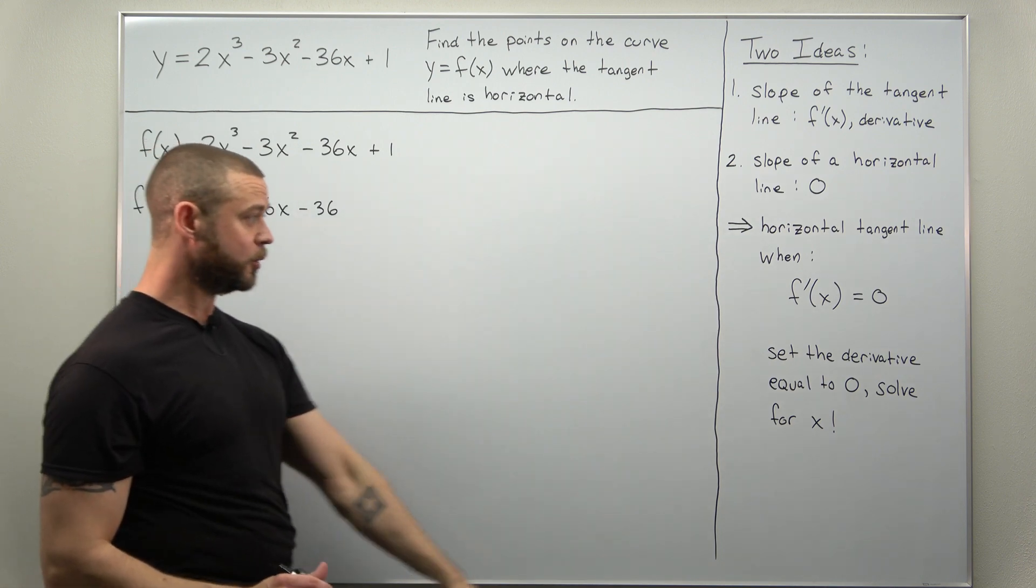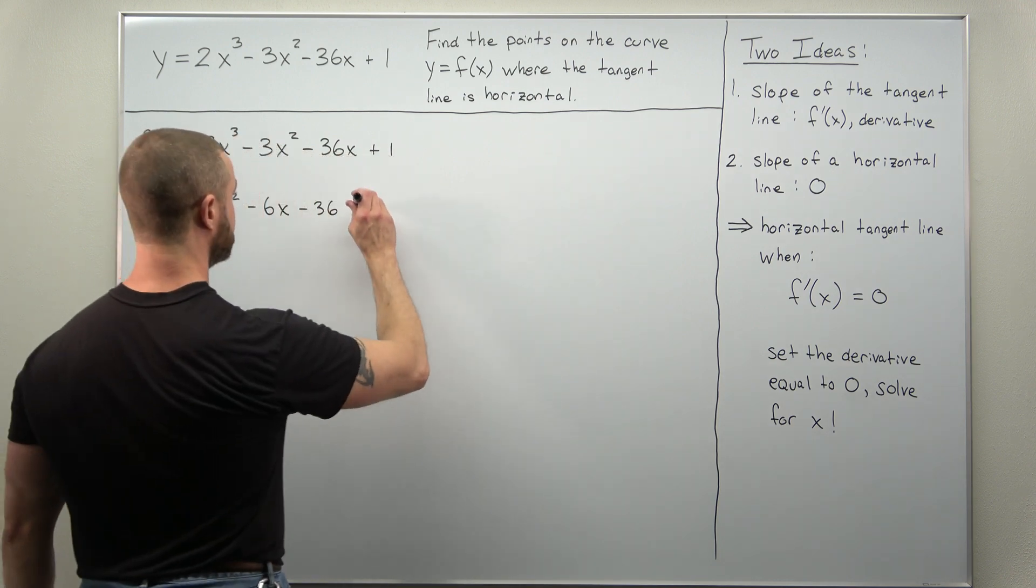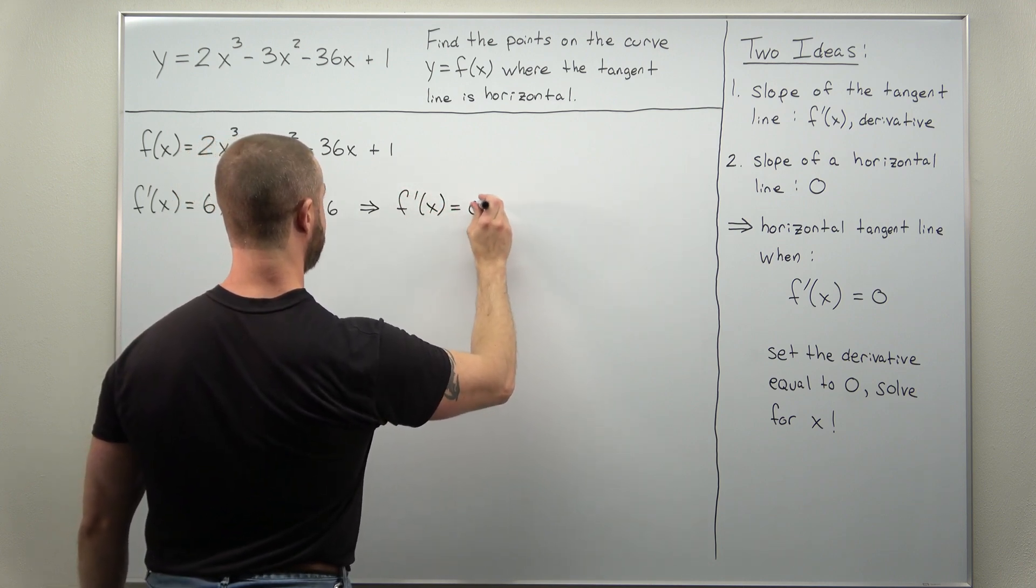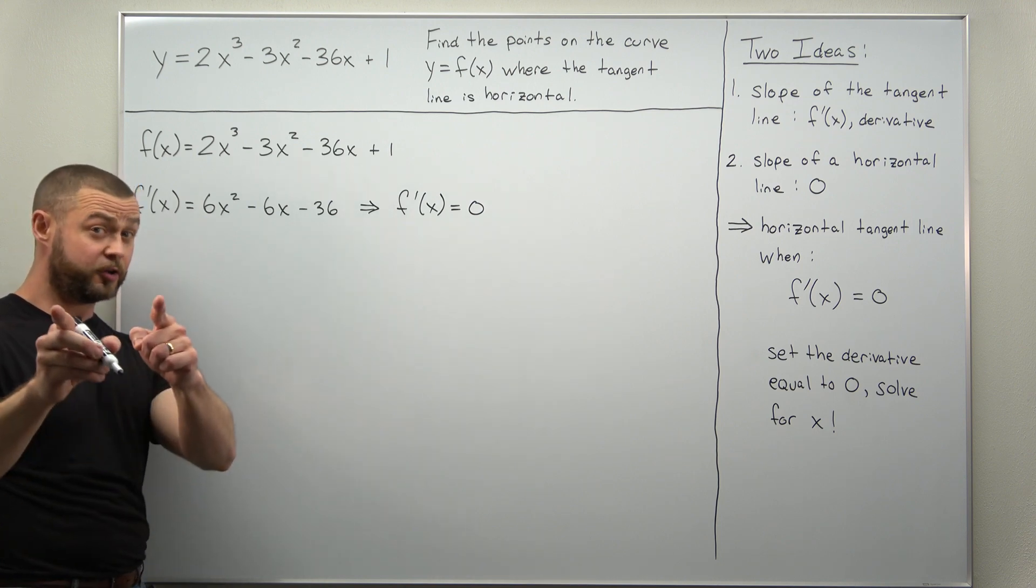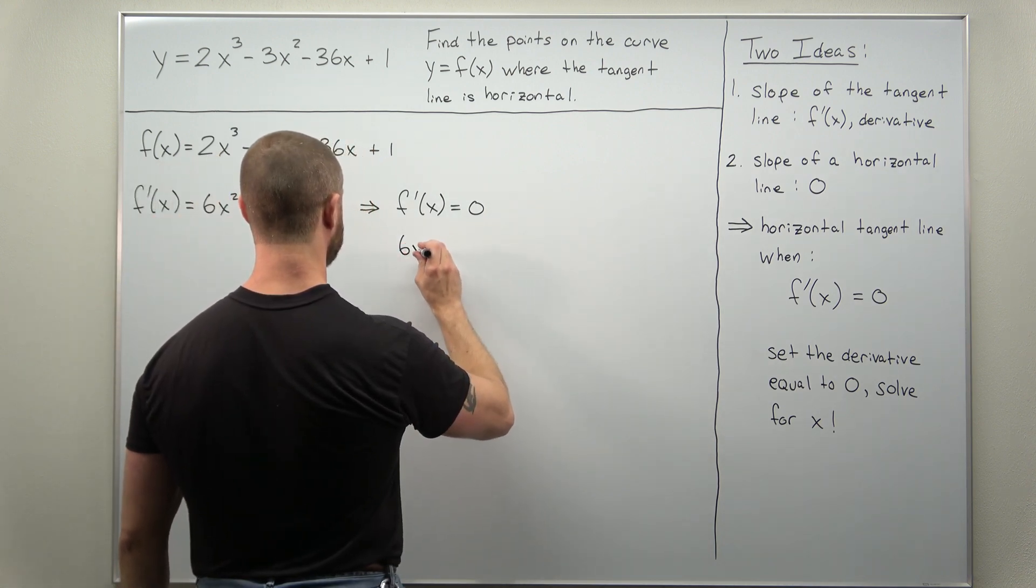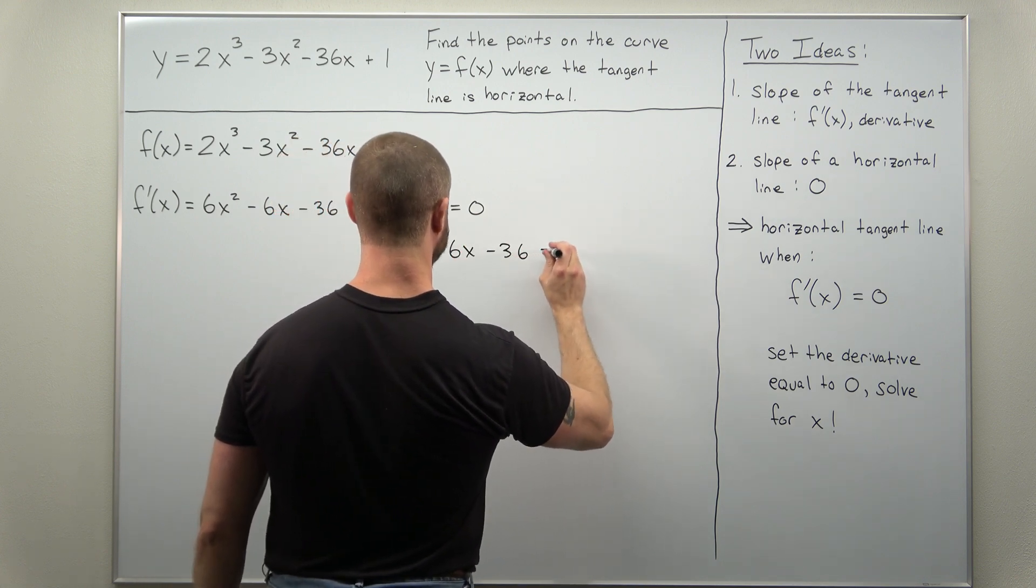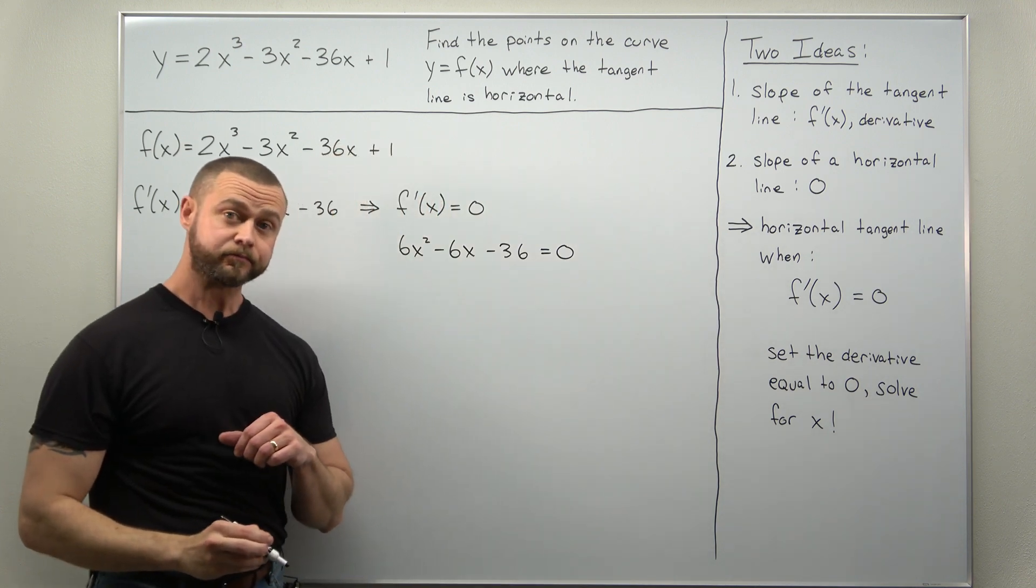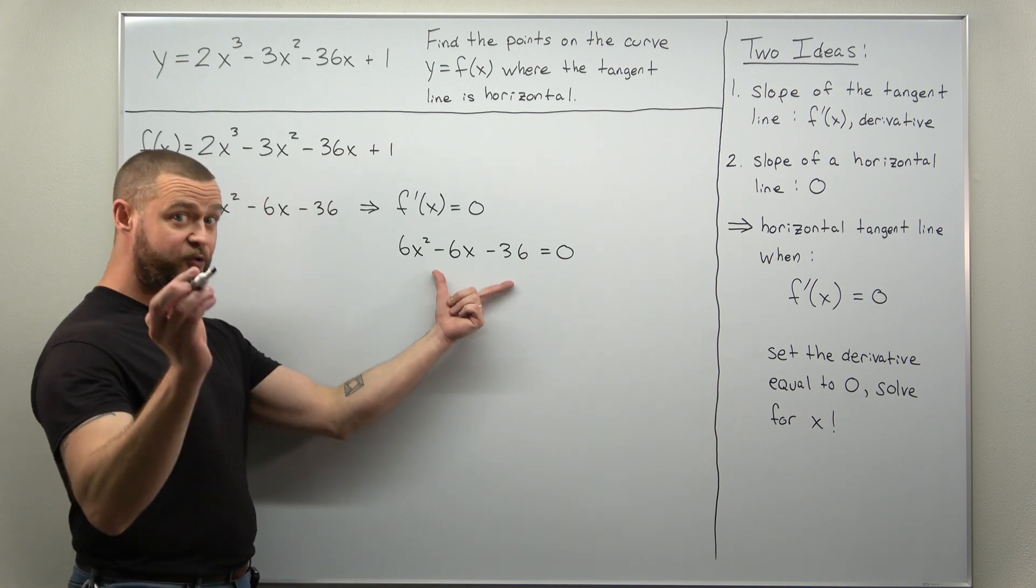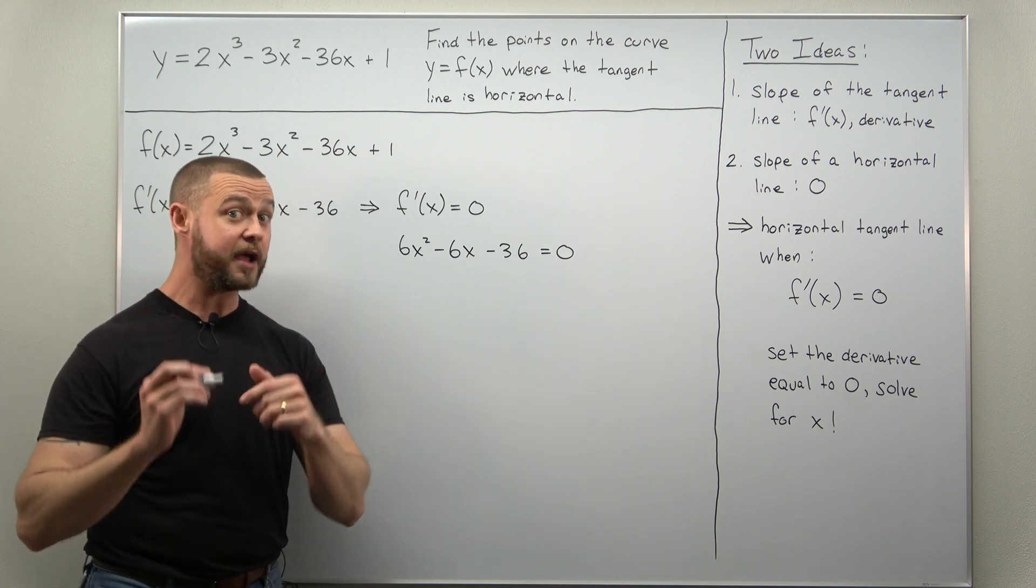Pretty straightforward. Now what we want to do, to find where the tangent line is horizontal, we're going to set that derivative equal to zero. So take your derivative f prime of x, set it equal to zero, and the calculus problem turns into an algebra problem. The equation that we're now solving is 6x² minus 6x minus 36 equals zero. And that looks like something we might try to solve by factoring. Now this is a quadratic equation, so you can use the quadratic formula, but always see if you can try to factor it first.